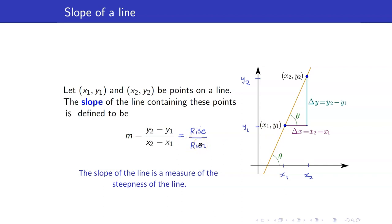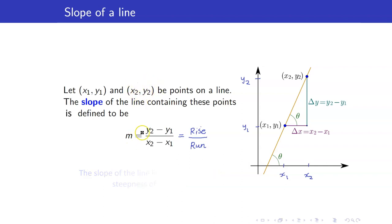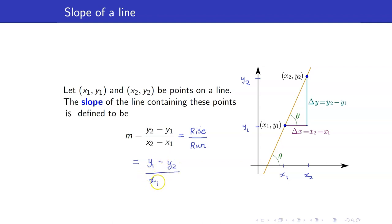Take note that for slopes, the order matters. So for example, if you started with the point x2, y2 for y2 minus y1, you should also start again with this point for the difference in the x-coordinates. So if I wanted to start with the point x1, y1, the slope is y1 minus y2 all over x1 minus x2.